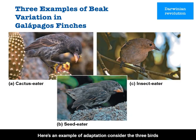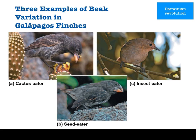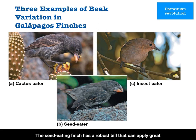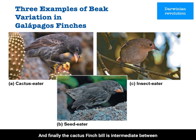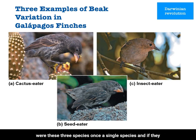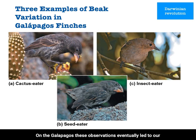Consider three birds on the slide. The insect-eating finch has a pointy bill — such a bill is good for catching bugs. The seed-eating finch has a robust bill that can apply great pressure to crack open the hard shell of seeds. And finally, the cactus-finch bill is intermediate between these two extremes. Darwin asked: were these three species once a single species? And if they were, how did their beaks become so well-adapted to their roles on the Galapagos? These observations eventually led to our greater scientific understanding of natural selection.